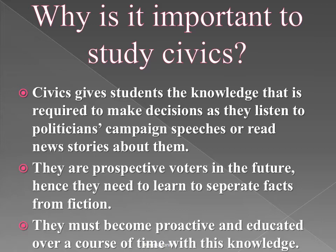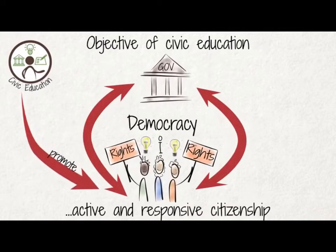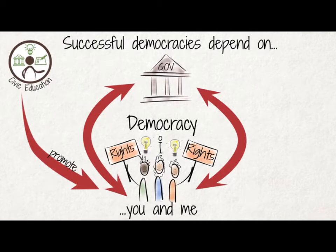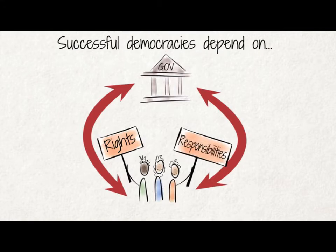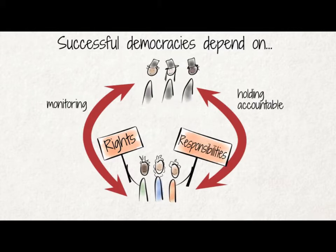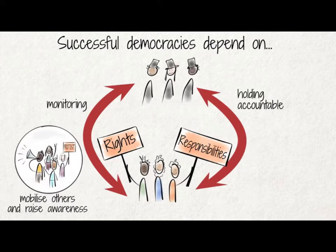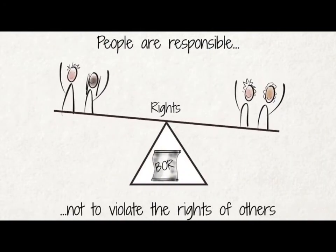Another fun fact: Benjamin Franklin, one of the founding fathers of the United States, is known as the father of civics. The overall objective of civic education is to promote active and responsible citizenship. Successful democracies critically depend on active citizens upholding and claiming their rights. But active citizenship is also about living up to our democratic responsibilities — monitoring the performance of our government and holding political leaders accountable to fulfill their promises. If we see things going wrong, we can mobilize our community to raise awareness, change policies, or ensure proper implementation of the law. While the state is responsible for providing basic services, it is up to the people not to violate the rights of others.